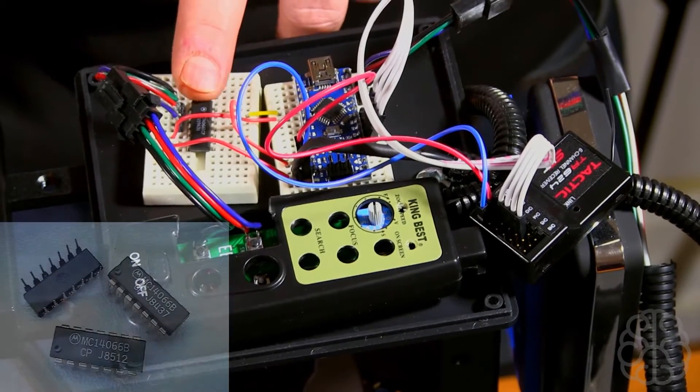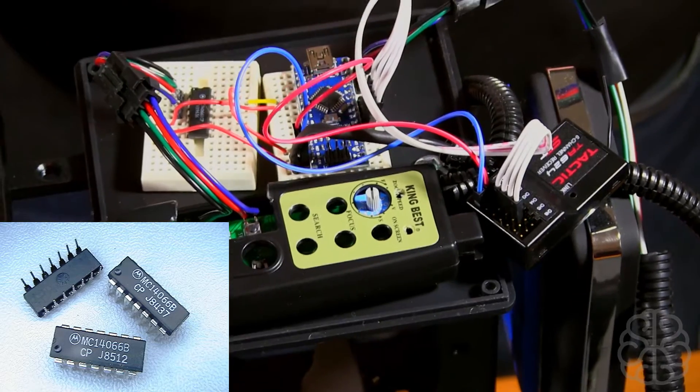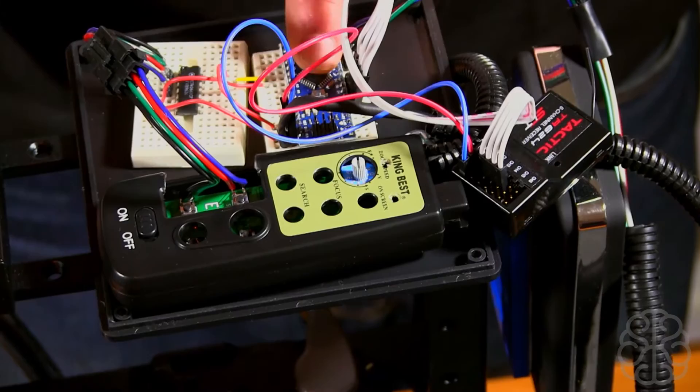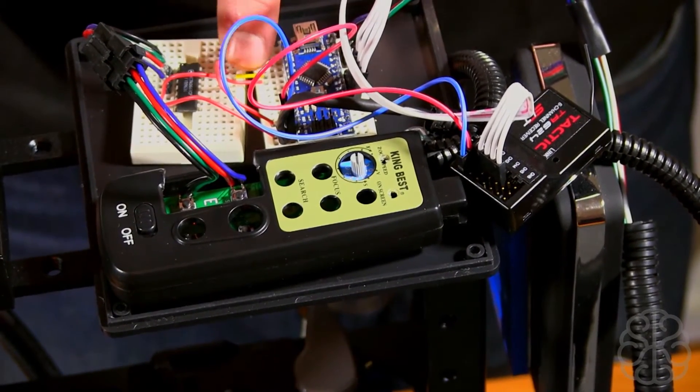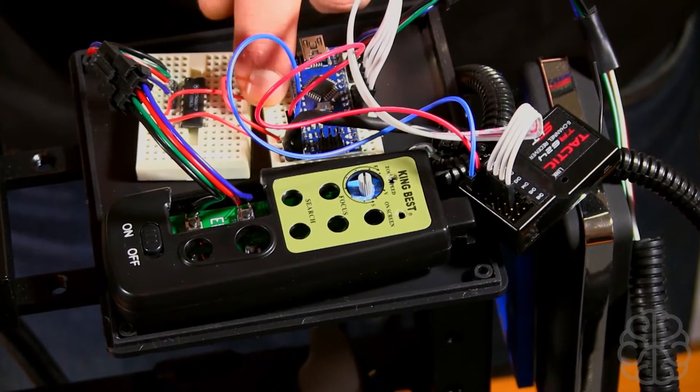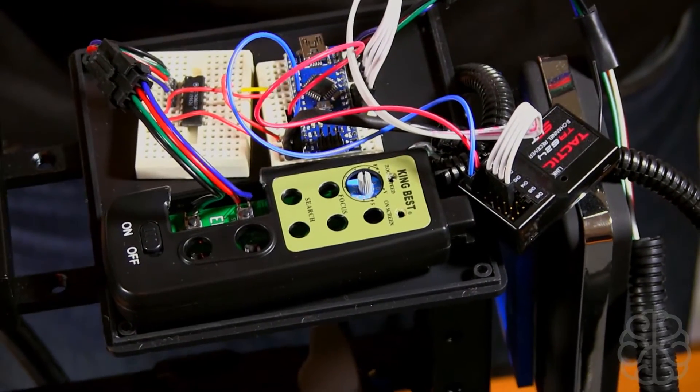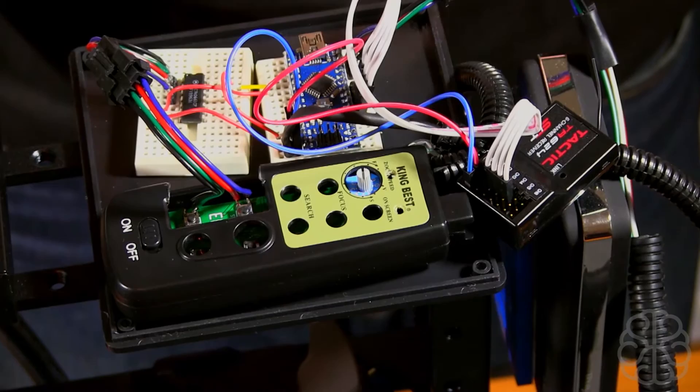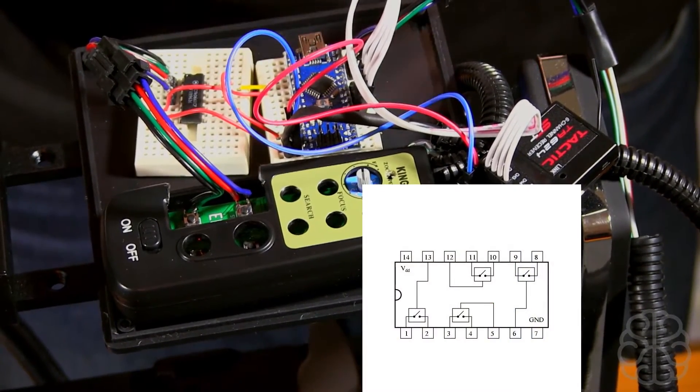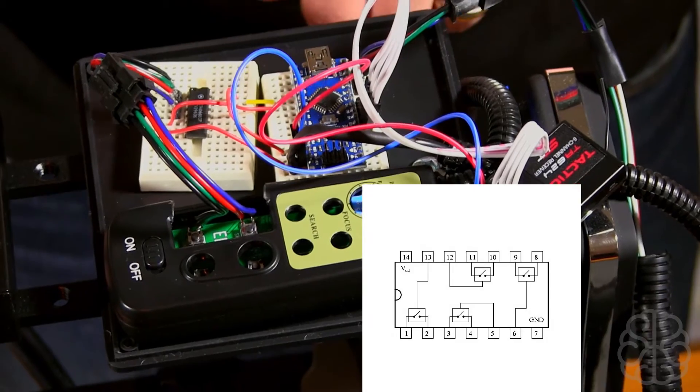All I did is I soldered two wires, and this goes to this chip here, which is the MC14066B. This little guy acts as a switch. I have two wires coming from the nano that will simulate key presses. If I put one of these pins high, then it will connect these two as if I was clicking on a button.